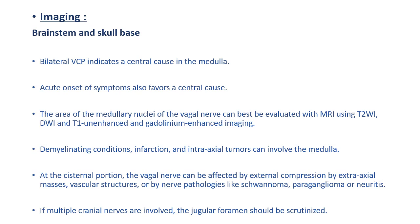When we come to imaging, it can be divided into intracranial and extracranial parts. Intracranial includes the brainstem and the skull base, where bilateral vocal cord palsy is common and the onset of symptoms is usually acute. The area of the medullary nuclei of the vagal nerve can be best evaluated with MRI using T2, DWI, and T1 contrast and non-contrast enhanced imaging. Demyelinations, infarctions, and tumors can involve the medulla. At the cisternal portion, the vagal nerve can be affected by external compression by various extra-axial masses, vascular structures, or by nerve pathologies like schwannoma, paraganglioma, or neuritis.